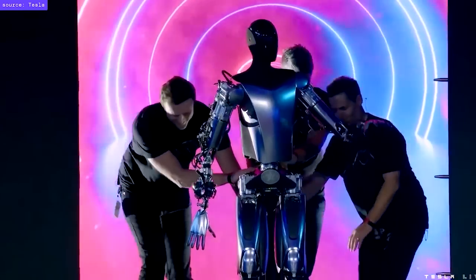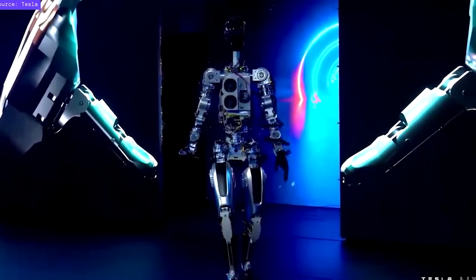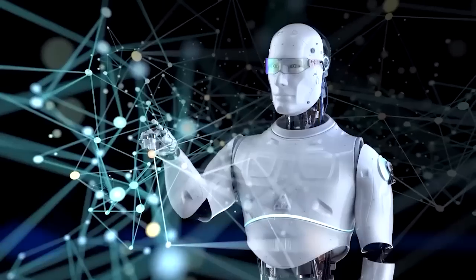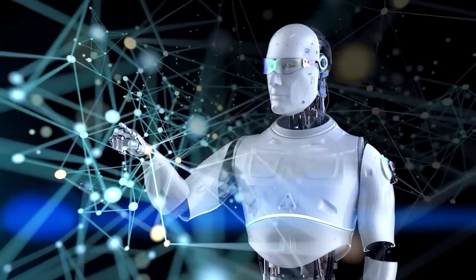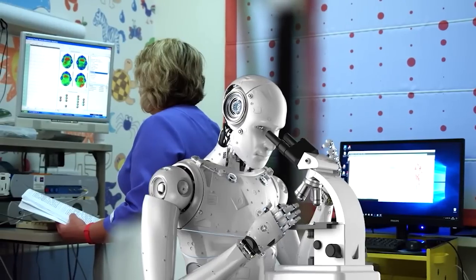Although Optimus is still in its early stages of development, the hope is that it will eventually be able to perform tasks such as walking, climbing stairs, and using tools. Right now, Tesla plans to pilot the robot at one of its production facilities, where it will work alongside human workers.